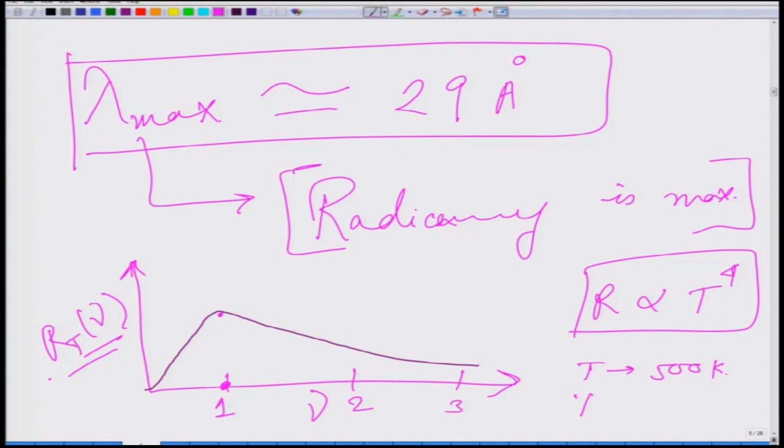Now if I go to T as 1000 Kelvin, I can see that nu max is proportional to absolute temperature, this is what the Wien's law tells us. So basically at higher temperature the frequency at which the radiance becomes maximum shifts towards the right side here, suppose at this frequency I am getting this.